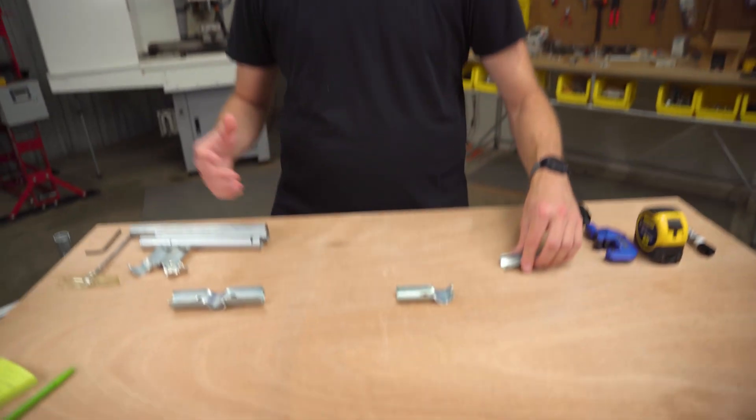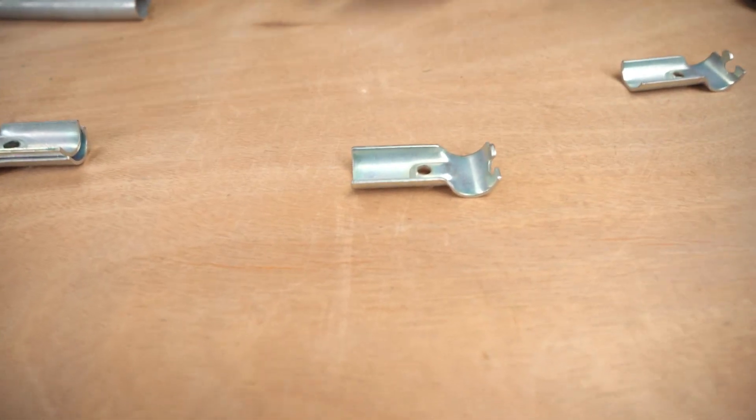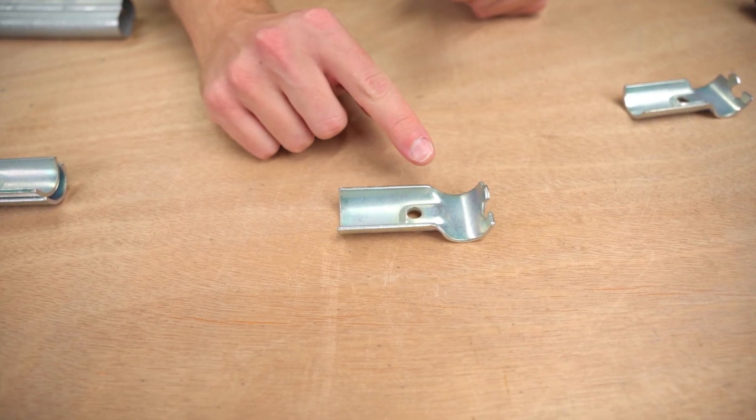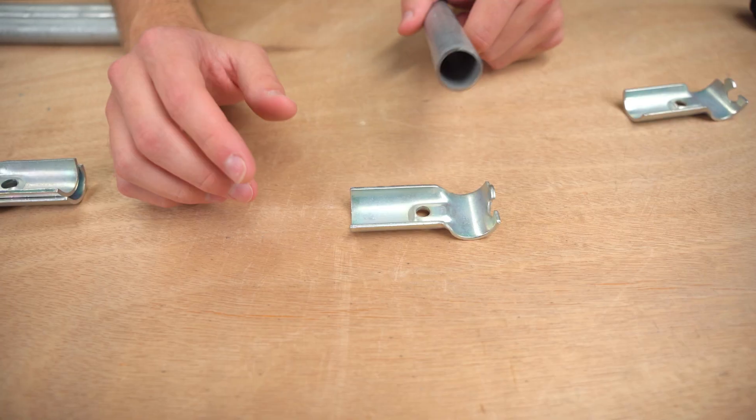There's really three main things that you want to keep in mind. And we can really highlight one of them with the maker pipe T-connector because this one highlights two of the connections that you're going to see really often in whatever connector it is that you're using.